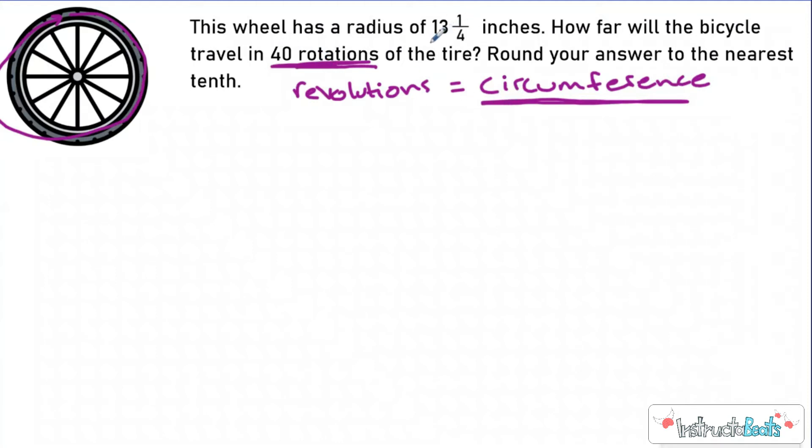So when I look at that right here, I'm automatically thinking I probably have to do something with my circumference. Let's go ahead and read the question. So it says the wheel has a radius of 13 and one-fourth inches. So our radius is 13.25.